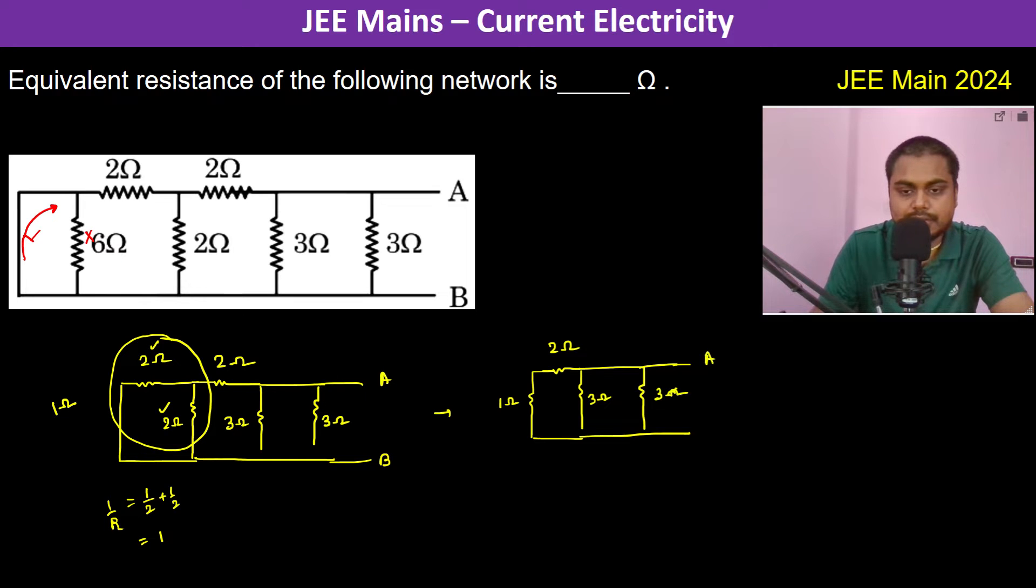Okay, this is A, this is B. So now again, 1 plus 2 is again 3 ohm. 3, 3, 3, so all 3 in parallel. 3 ohms, all 3 ohms in parallel.